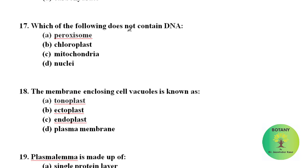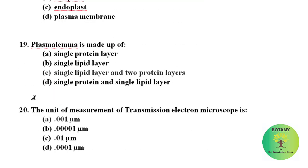Which of the following does not contain DNA? DNA are absent in peroxisomes. The membrane enclosing cell vacuoles is known as tonoplast. Plasma lemma is made up of single lipid layer and two protein layers. The unit of measurement of transmission electron microscope is 0.001 micrometers.